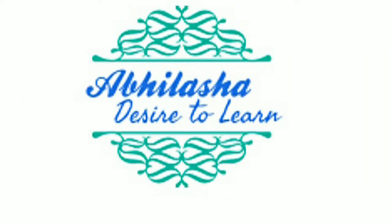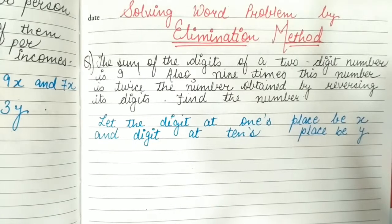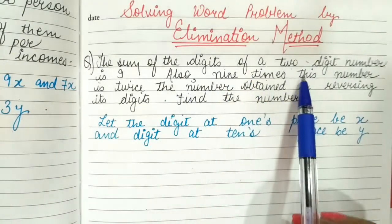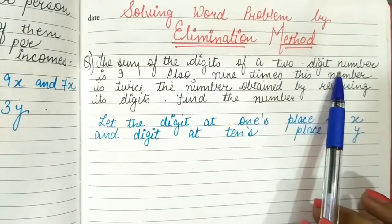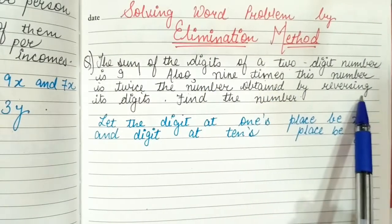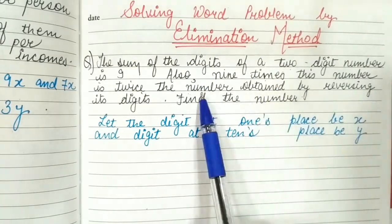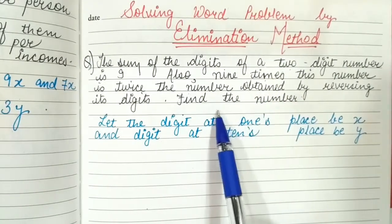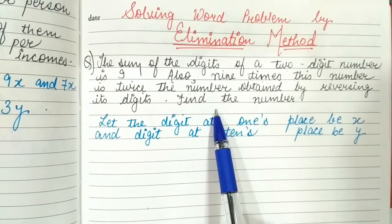Today we are going to solve some word problems by the elimination method. The first question is: the sum of the digits of a two-digit number is 9. Also, 9 times this number is twice the number obtained by reversing its digits. Find the number.